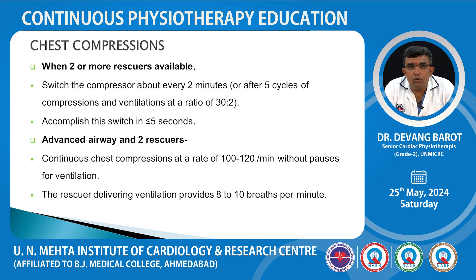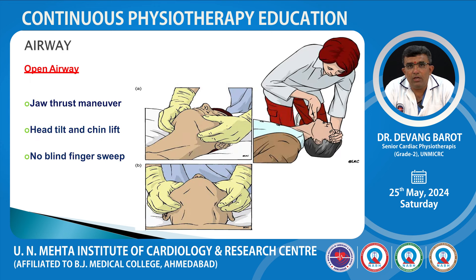When 2 or more rescuers are available, switch the compressor about every 2 minutes. The compression-to-ventilation ratio is 30:2. Complete this switch in less than 5 seconds. For advanced airway with 2 rescuers: perform continuous chest compressions at a rate of 100 to 120 per minute without pause for ventilation. The rescuer delivering ventilation provides 8 to 10 breaths per minute.